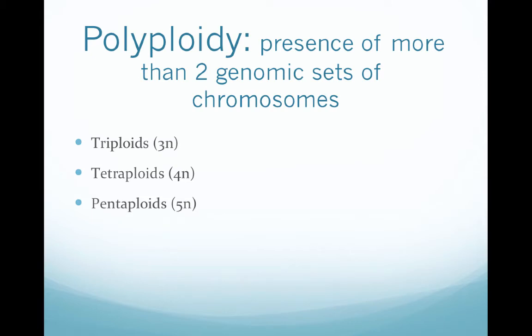Switching gears into our last big section: polyploidy. This is where we see the presence of more than two genomic sets of chromosomes. We're used to dealing with haploid and diploid sets of chromosomes — one copy and two copies respectively. But in agriculture, polyploidy is actually a very big part of plant breeding. Polyploidy is most commonly going to be in triploids, tetraploids, or pentaploids, which are 3N, 4N, or 5N respectively.